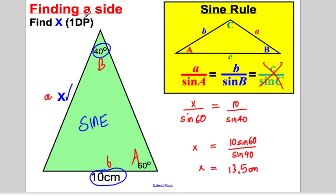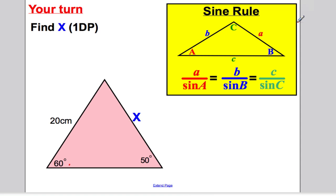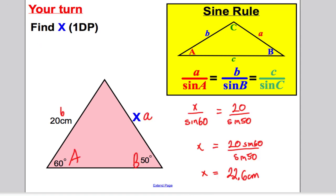Have a sense check — does it look right? Yes, that looks like it could be about 13.5. The key is: it's for non-right angle triangles. If you've got an angle and the opposite side given, use the sine rule. Label the side you're trying to find little a, the angle opposite big A, and the other two little b and big B. Substitute into the formula and rearrange to get your unknown. Now you have a go — and the answer to that practice question was 22.6 centimeters.